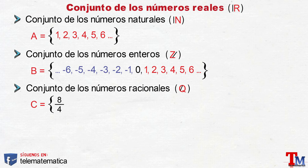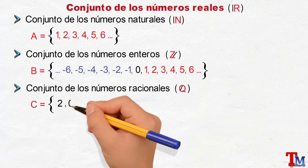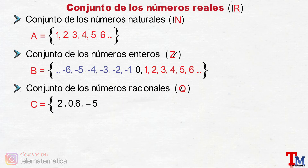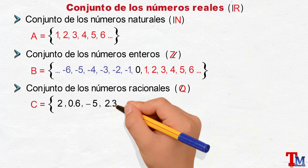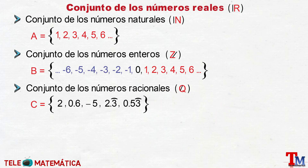Por ejemplo, tenemos la fracción ocho cuartos que la resolvemos y nos quedaría como resultado el número dos, que es un número natural y también entero. Tenemos la fracción tres quintos que nos quedaría 0,6, un número decimal exacto. Tenemos la fracción menos diez medios que nos quedaría menos cinco, un número entero. Y la fracción siete tercios que nos quedaría 2,3 periodo, un número decimal periódico puro.